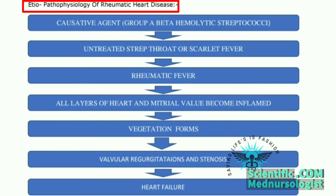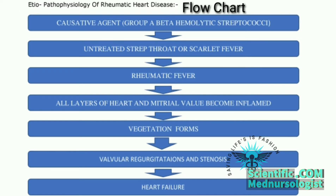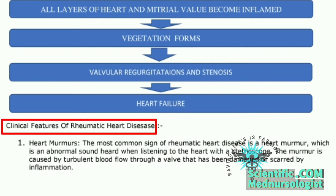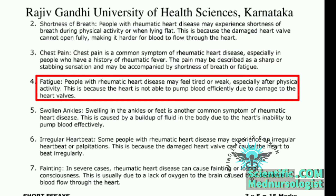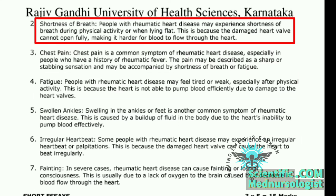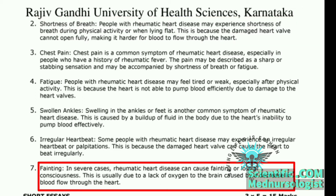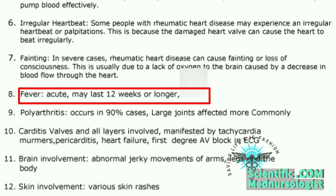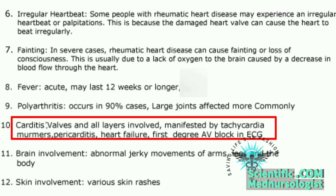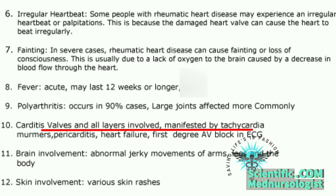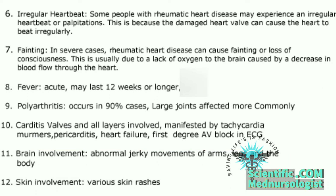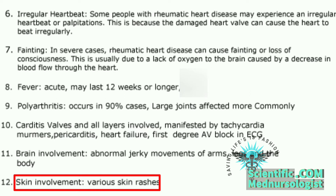For the answer, first write the etiopathophysiology of rheumatic heart disease — you can see the flowchart on the screen. Secondly, write the clinical features, which include: chest pain, getting tired easily, palpitations, breathlessness on exertion and while lying down, fainting, swelling of the feet, fever if damaged heart walls get infected, polyarthritis, carditis involving all walls of the heart manifested by tachycardia, brain involvement with abnormal jerky movements of arms, legs, and body, and external skin involvement with various skin rashes.